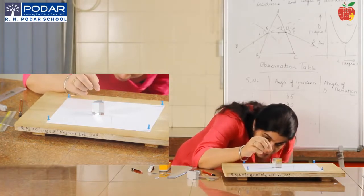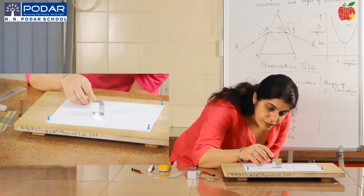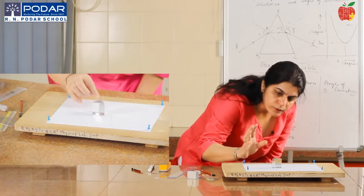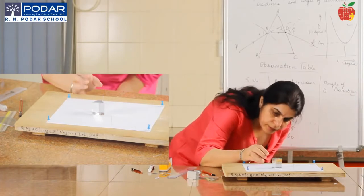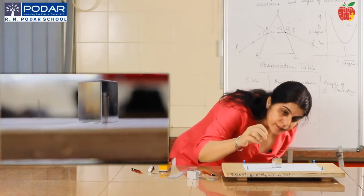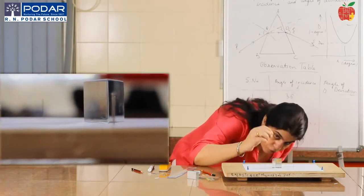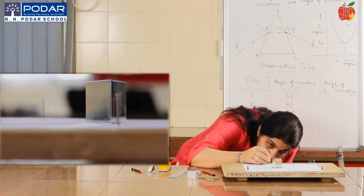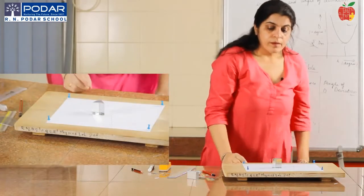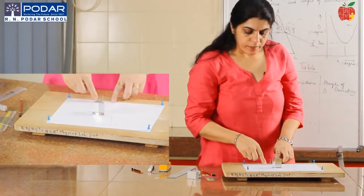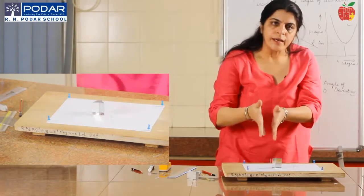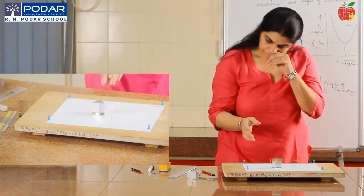Fix the third pin at the point where the images of the two incident-ray pins and the third pin all appear in the same straight line. Then take a fourth pin and position it such that the images of the two incident-ray pins, the third pin, and the fourth pin all lie in the same straight line.